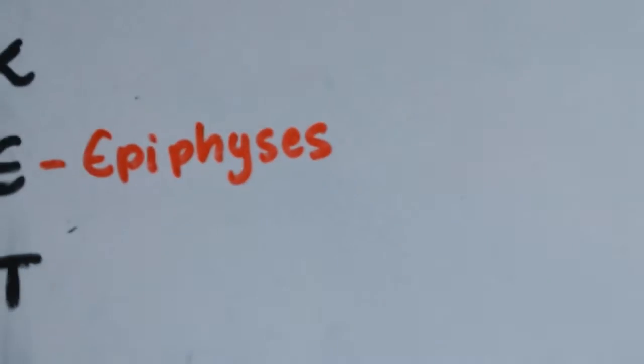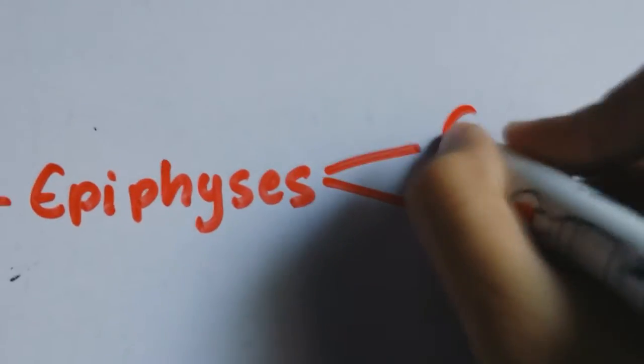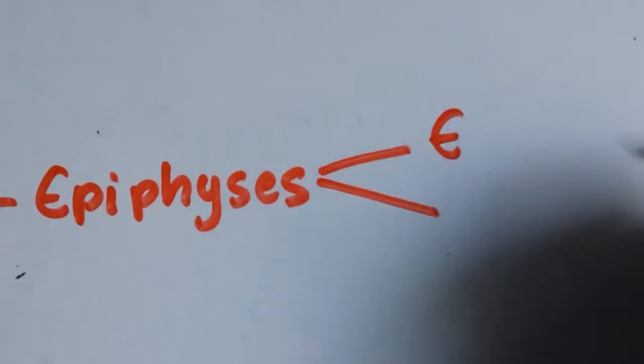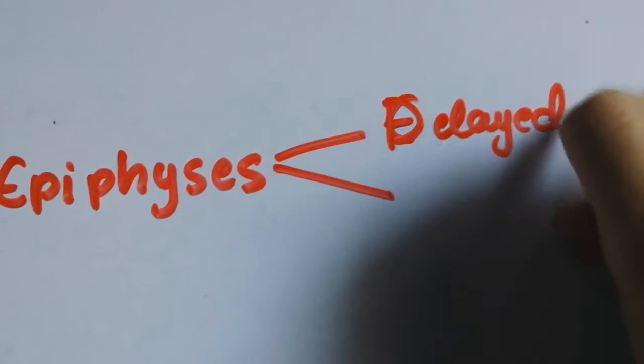There are two epiphyseal manifestations. First is the delayed appearance of Epiphysis is seen in patients with Rickets.